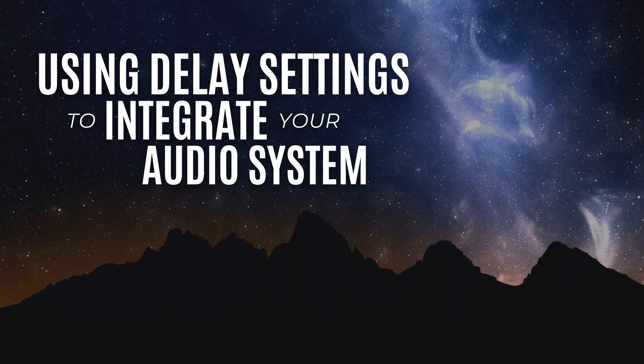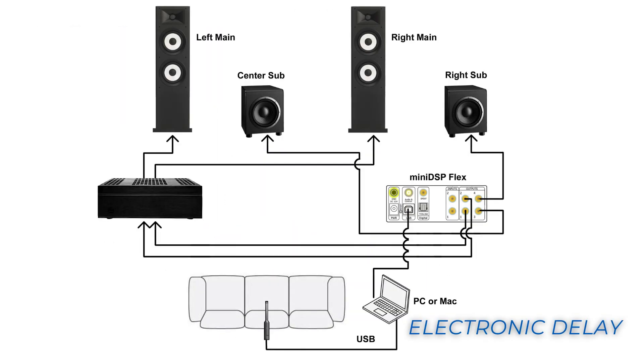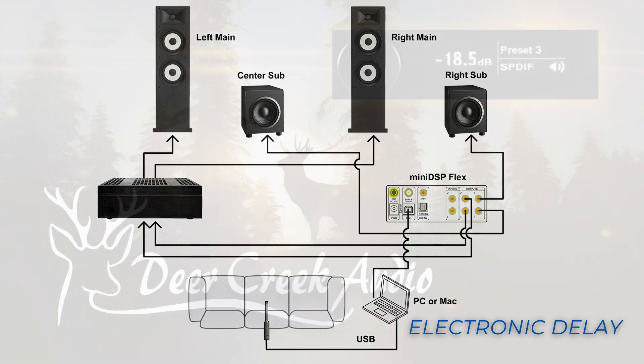Aligning the time of arrival of the audio signals from the full-range speakers and subwoofers improves system coherence. In this video, we will explore two methods for completing the time alignment process: physical delay using a four-subwoofer home theater system, and electronic delay using a 2.2 stereo configuration.